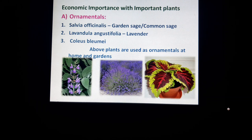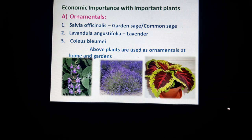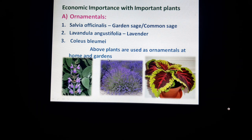The second one is Lavandula angustifolia, whose common name is lavender. From Lavandula angustifolia flowers, oil is extracted — that oil is lavender oil. Then there is Coleus blumei, which is also used as an ornamental plant because its leaves are very beautiful with variegated patterns. These above three plants are used as ornamentals at home and in gardens.